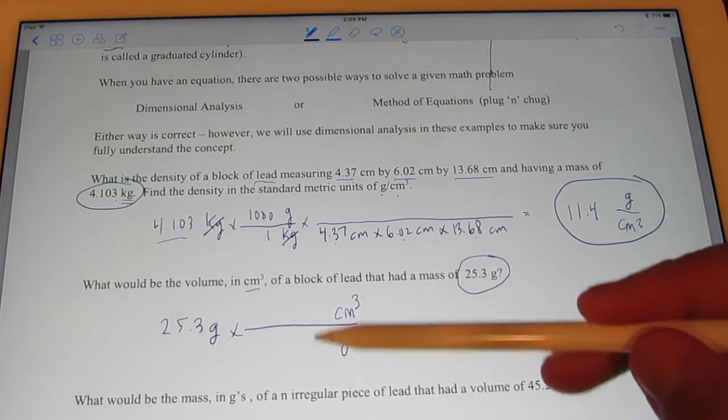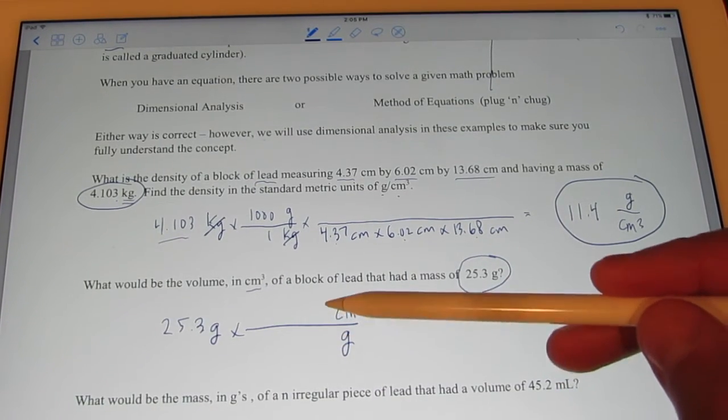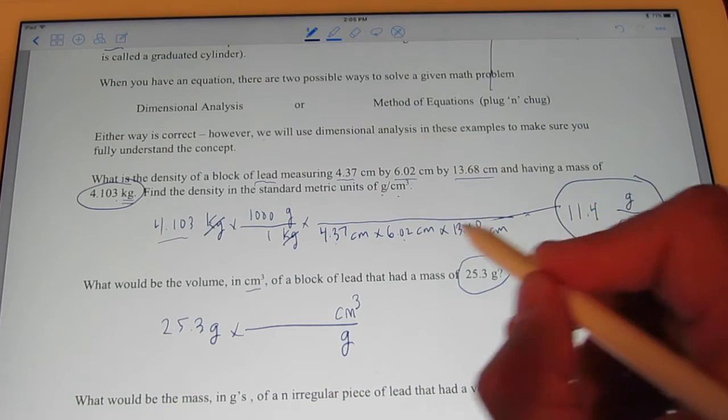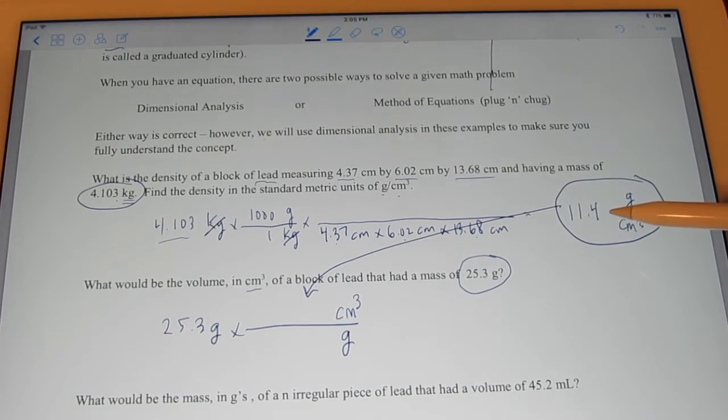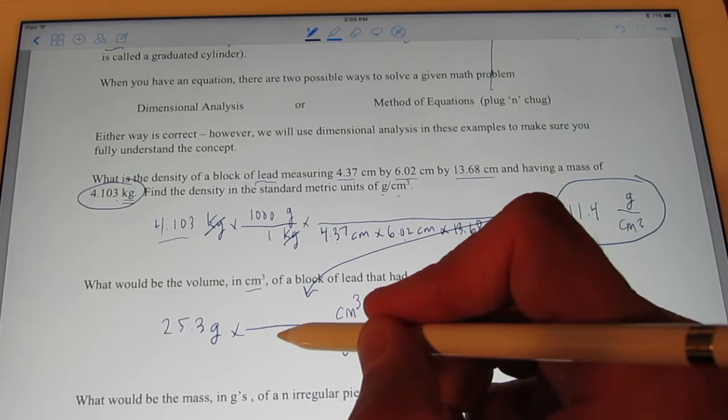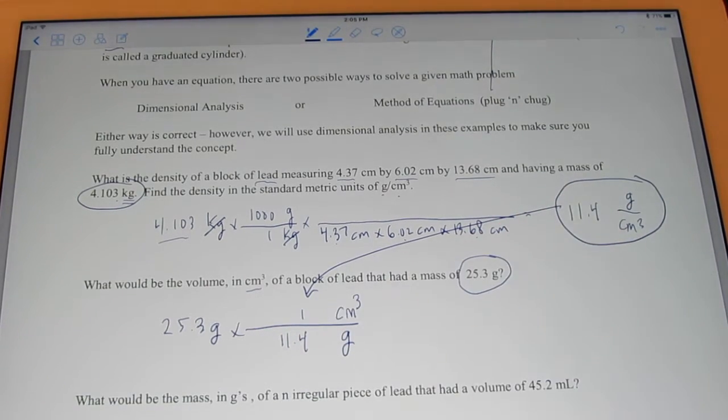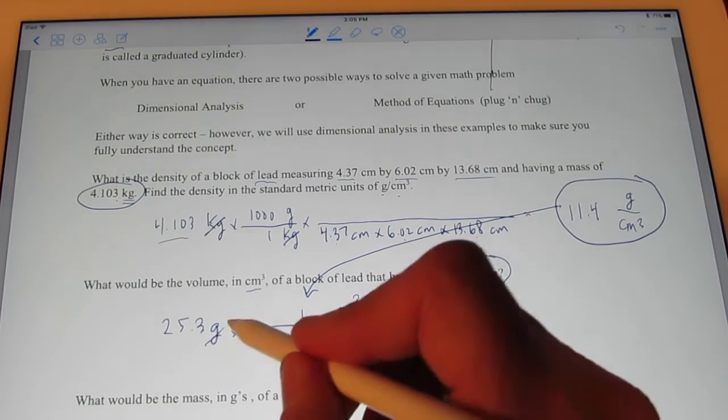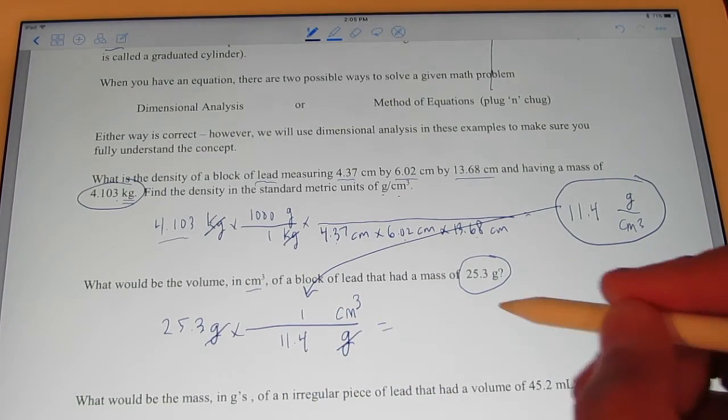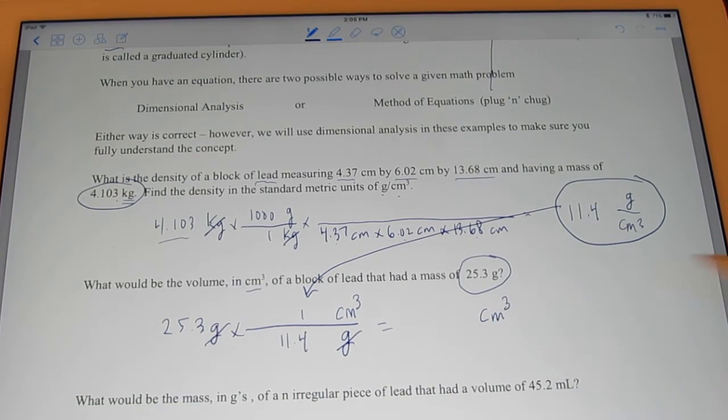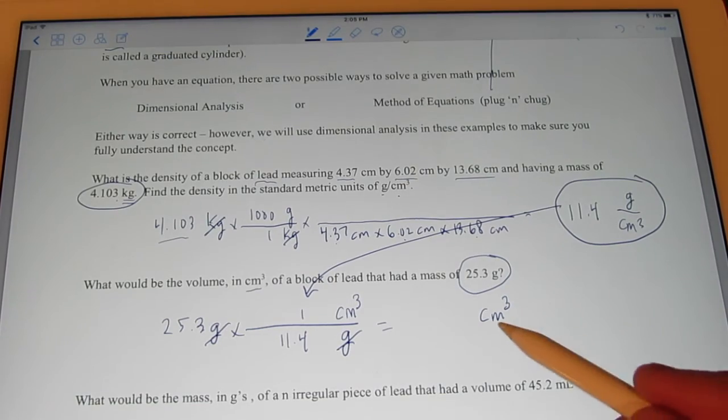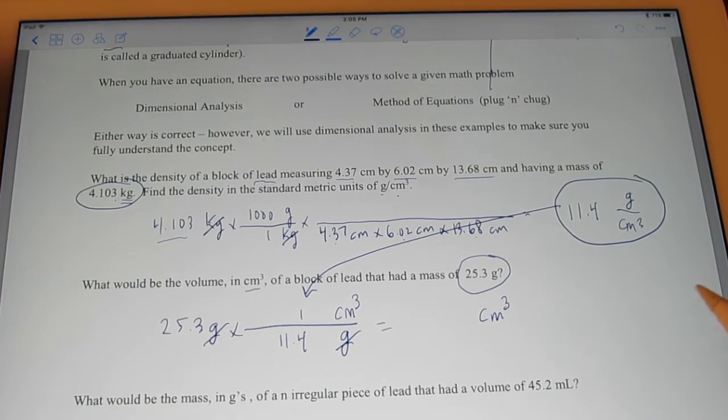Now, that looks weird. Do I know a conversion factor to go from grams to cubic centimeters? You bet I do. My density for lead is 11.4 grams in a cubic centimeter. 11.4 grams in a cubic centimeter. So, grams divide out. And I have the volume of my cube of lead in cubic centimeters.